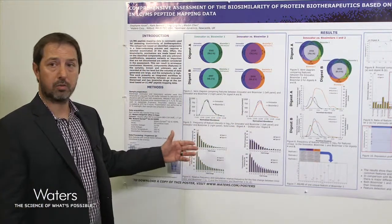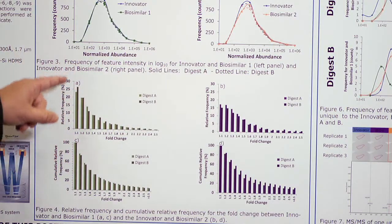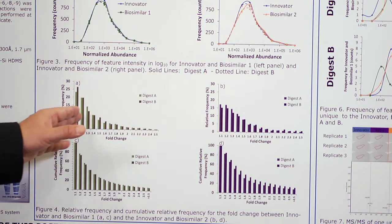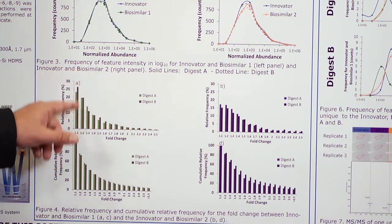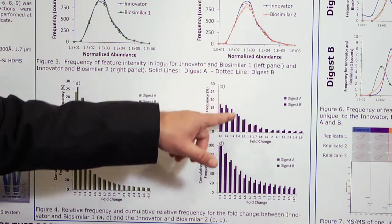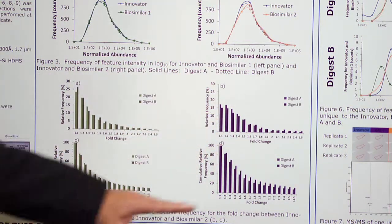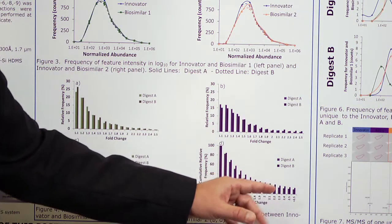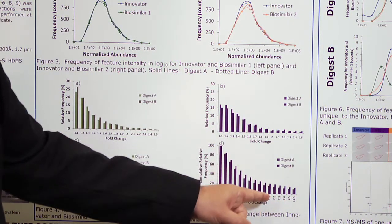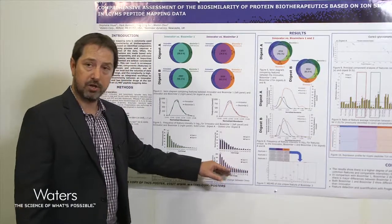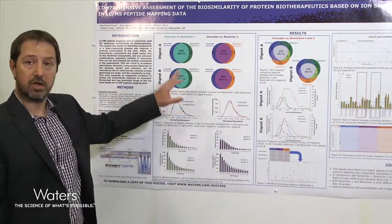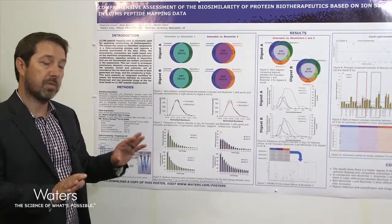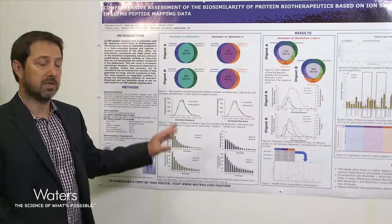Here I compare biosimilar one and innovator, and biosimilar two and innovator. We calculated the fold change — the fold change will always be above one — and you can see you have more features with a fold change below 1.5 for biosimilar one than for biosimilar two. At the bottom of that graph is a cumulative profile of the fold change, and you have far more features with higher fold change for biosimilar two, so just by looking at features and comparing intensity you can start to see a difference between biosimilar one and biosimilar two versus the innovator.